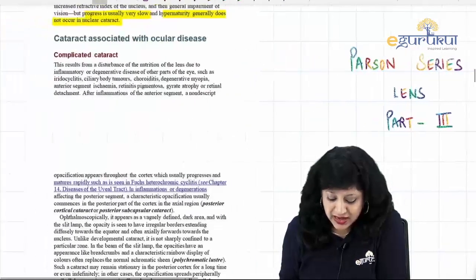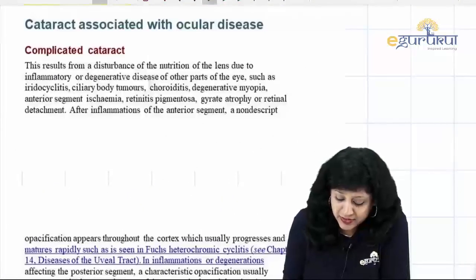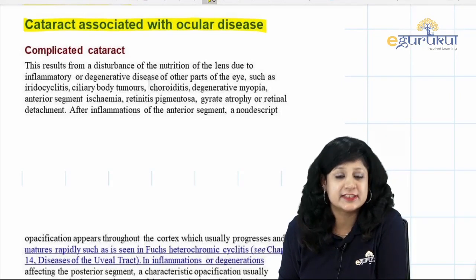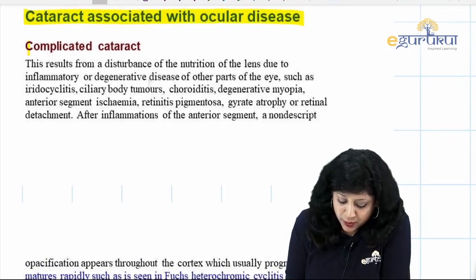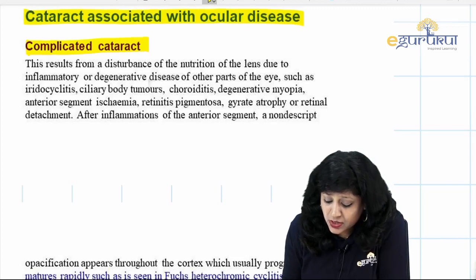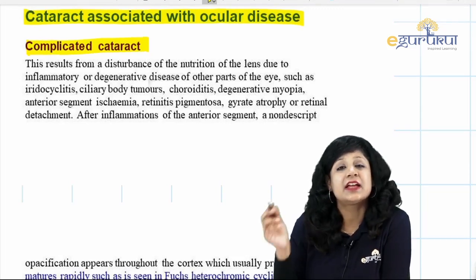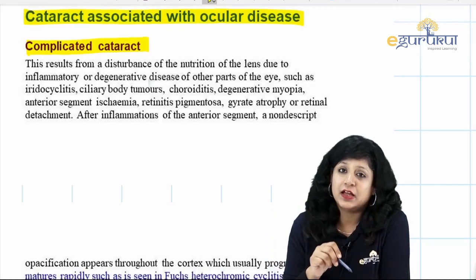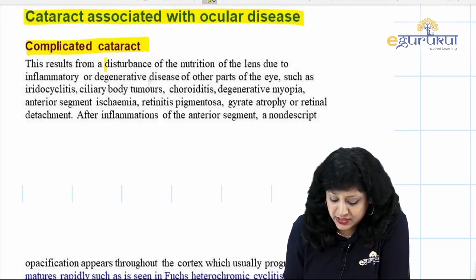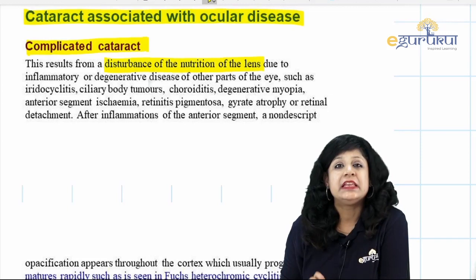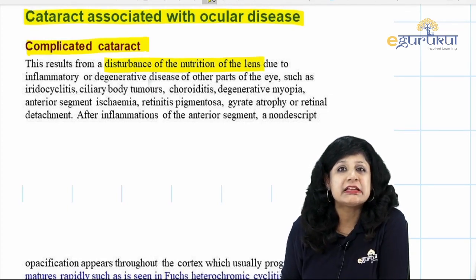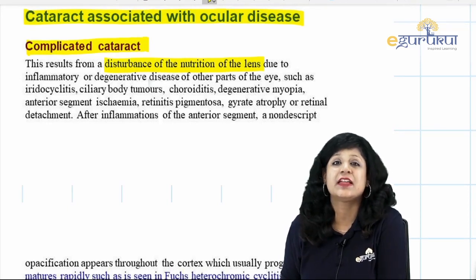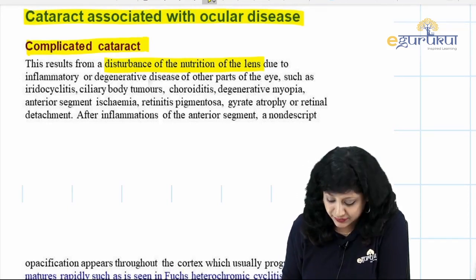Today we are going to start with cataracts which are associated with ocular diseases. First, let's start with the complicated cataract. Complicated cataract means the cataract occurring as a complication of some ocular disease. Whenever there is a disturbance of lens nutrition — whenever you have some problem affecting the nutrition of the lens — that kind of cataract is called a complicated cataract.